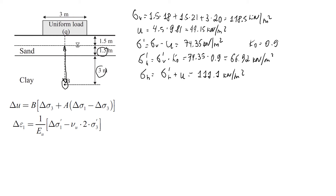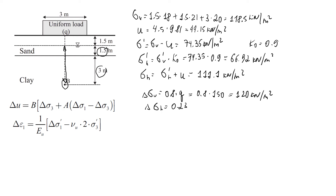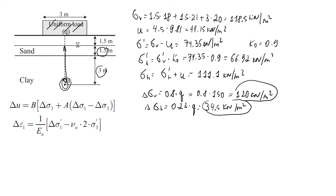Now let's look at what changes in vertical and horizontal stresses occur after applying the load, using the theory of elasticity values given to us. The vertical stress increases by 0.8 × q = 0.8 × 150 = 120 kN/m². The increase in horizontal stress is 0.23 × q, which is approximately 34.5 kN/m². So vertical stress increases by 120 and horizontal stress increases by 34.5 kN/m² at point B.